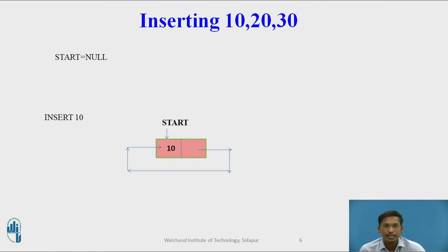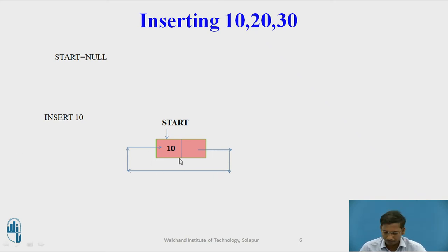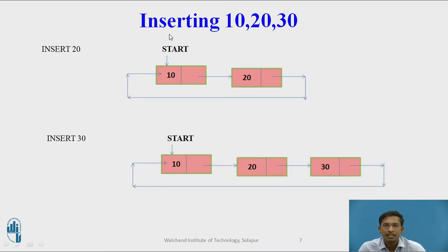We will see a diagrammatic representation. Suppose we insert 10, 20, and 30 in that sequence. Initially start is null. After inserting 10, its next points to itself. After inserting 20 at the beginning, 20's next holds the address of 10, which is start. Similarly, 30 is inserted at the beginning using the same procedure.